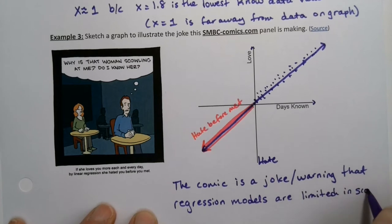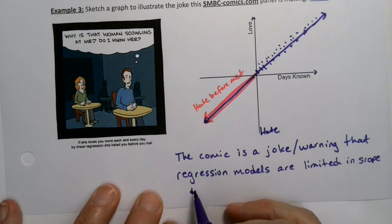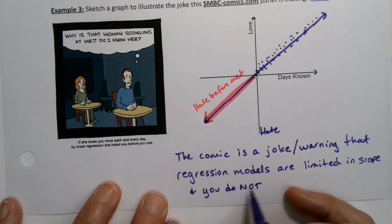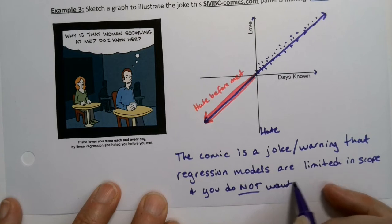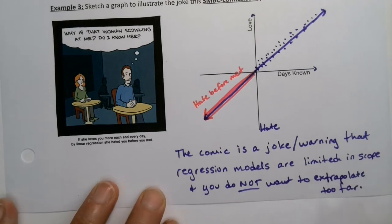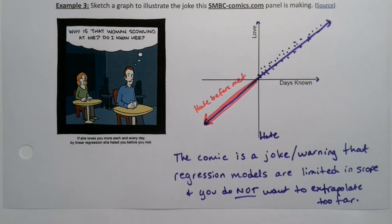Regression models have limitations, and you don't want to go outside their scope. Don't extrapolate too far, which is what was done here. It was for comedic effect, but nevertheless, you don't want to extrapolate back to being hated before you're even met. That doesn't make any sense.